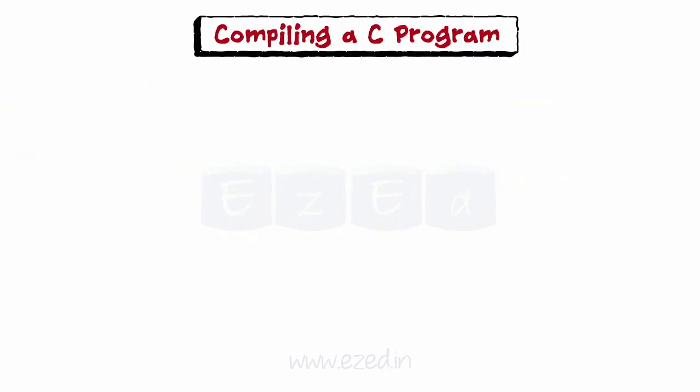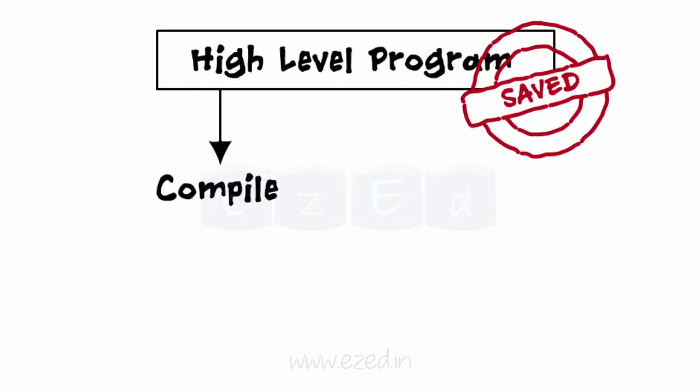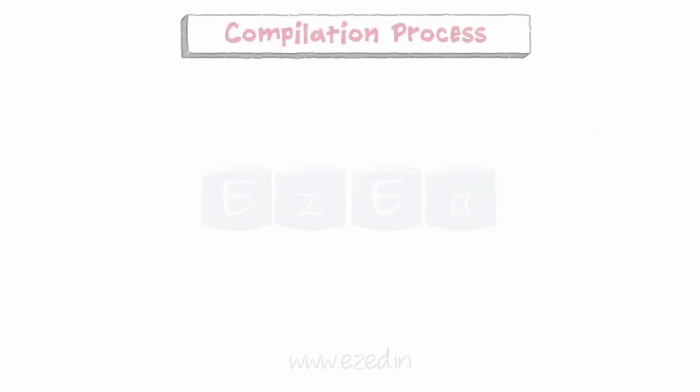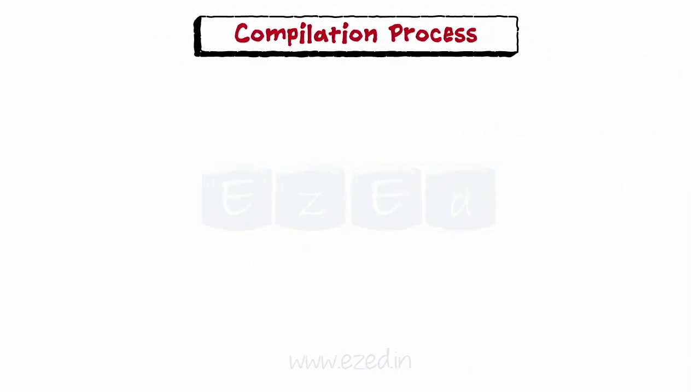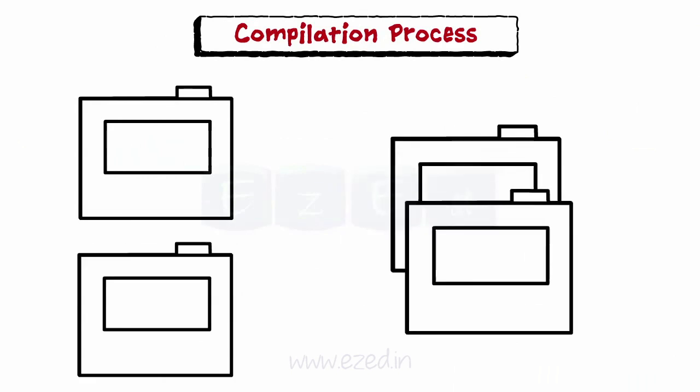Once the program is written in high-level language and saved, it needs to be compiled into machine language in order to execute it. The compilation process has to deal with various files and it also produces a number of files. There are four important files which we need to understand.